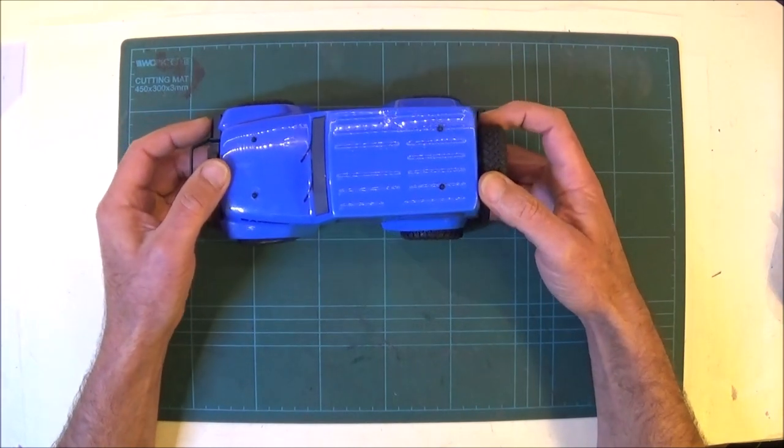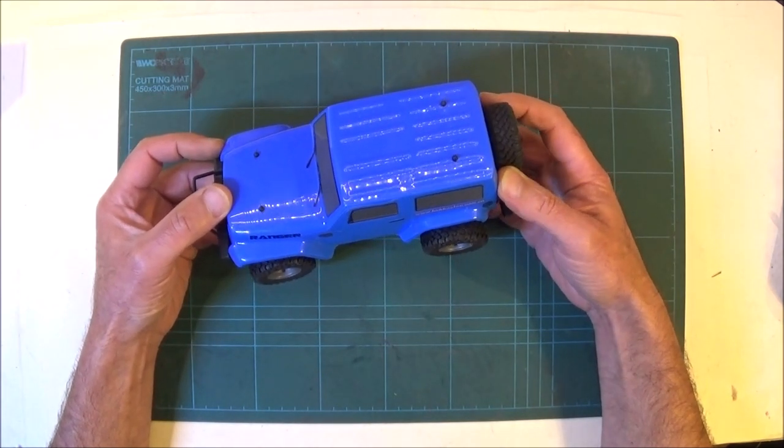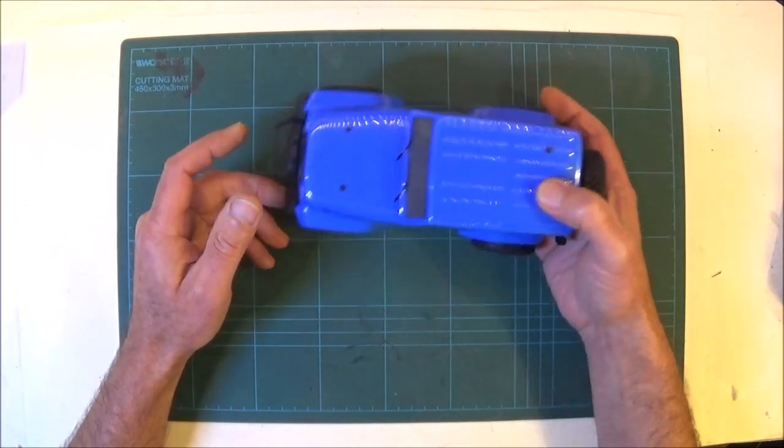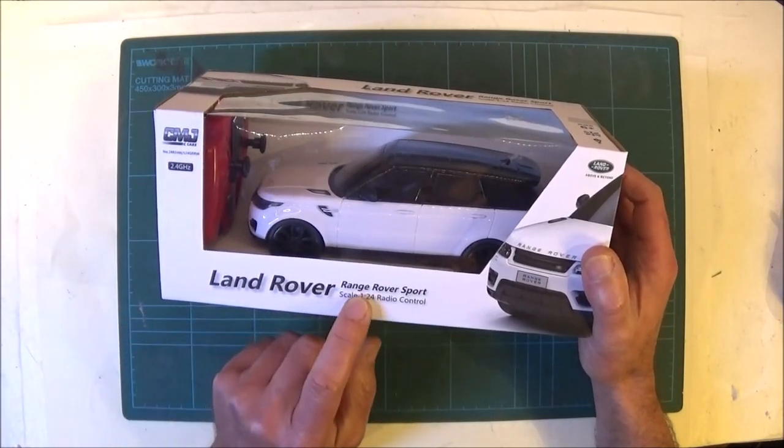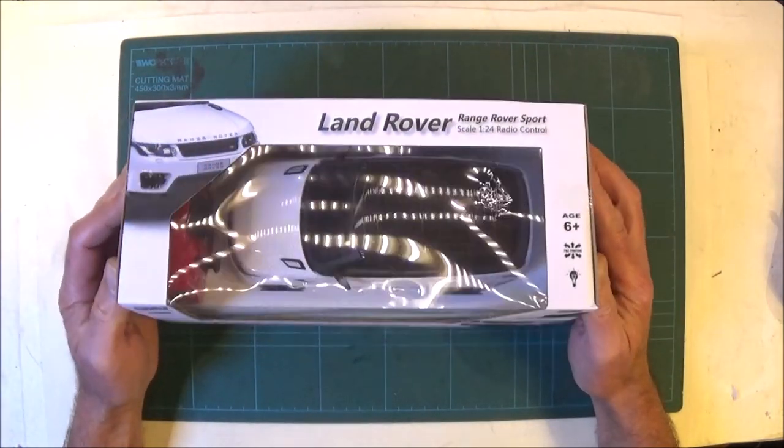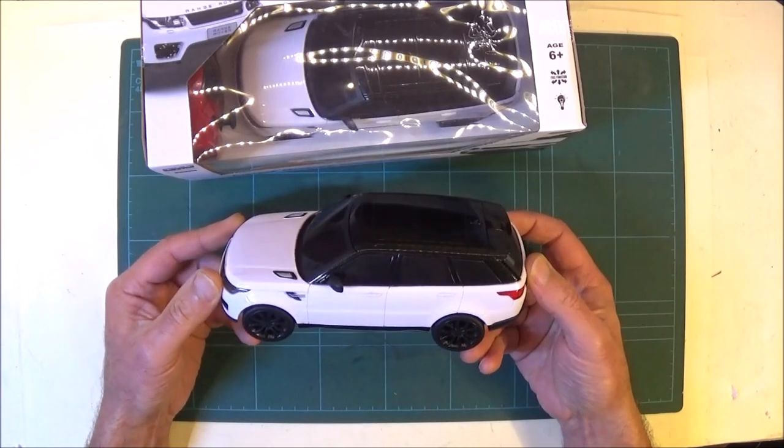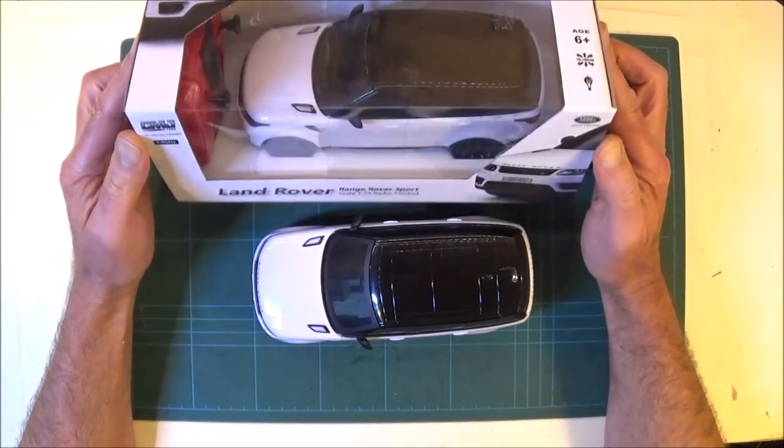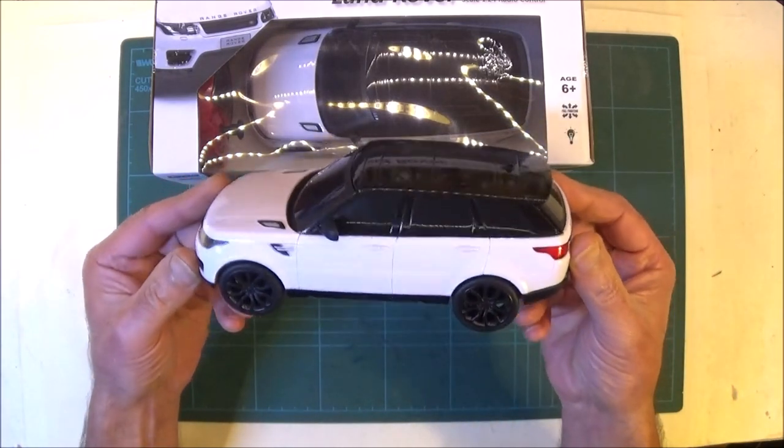I looked at some Tamiya static 1/24th kits but the problem with those is they're very expensive and the bodies are quite fragile. So I've been looking around and I looked on Argos the other day and I found this thing. It's a CMJ Land Rover Range Rover Sport 1/24th scale radar control. This was, would you believe, 11 quid, 11 pounds and would you believe I bought two of them. I checked out on Argos and they got a deal, this one was 11 quid and for 15 pounds you could have two. So basically this one cost me 4 quid.